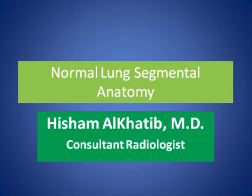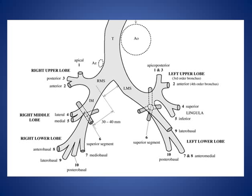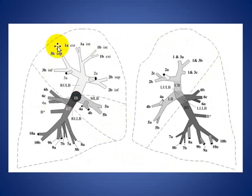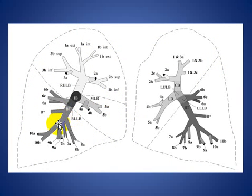My topic today is the Normal Lung Segment Anatomy on CT Scan. The right lung is composed of three lobes and the left lung is composed of two lobes. There are three segments in the right upper lobe, two segments in the middle lobe, and five segments on the right lower lobe.